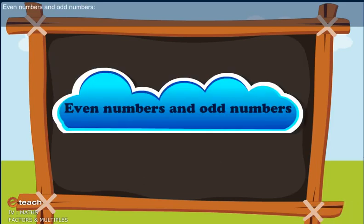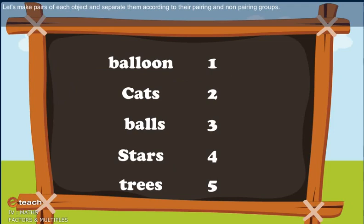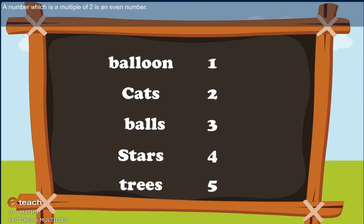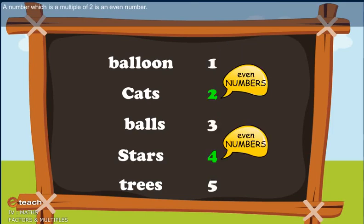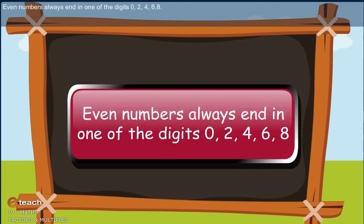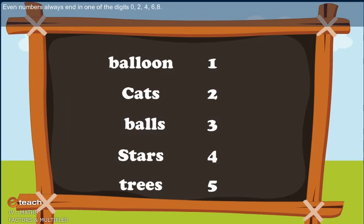Even numbers and odd numbers. Let's make pairs of each object and separate them into pairing and non-pairing groups. A number which is not a multiple of 2 is an odd number. A number which is a multiple of 2 is an even number. Odd numbers always end in one of the digits 1, 3, 5, 7, or 9. Even numbers always end in one of the digits 0, 2, 4, or 6.